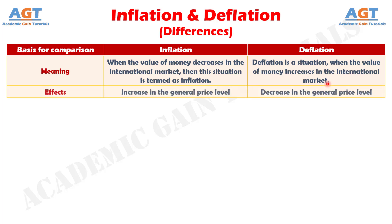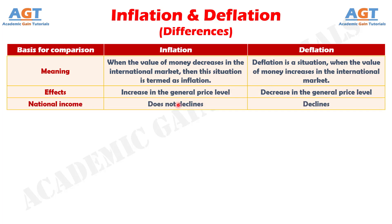Number two: due to the effect of inflation there is an increase in the general price level, whereas due to the effect of deflation there is a decrease in the general price level. Number three: national income does not decline due to inflation, whereas national income declines due to deflation.